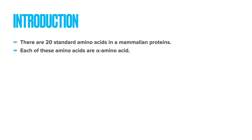All these 20 standard amino acids are referred to as alpha amino acids. Why are they called alpha amino acids? As you can see in the structure of an amino acid, there is an alpha carbon, and as you know, carbon has 4 valencies. A carboxyl group is bound to that alpha carbon, an amino group is bound to the alpha carbon, then H, then the R group. The carboxyl group attached to the alpha carbon is called the primary carboxyl group, and the amino group attached to the alpha carbon is called the primary amino group. As you can see, the carboxyl group is shown as protonated here, and the amino group is deprotonated.